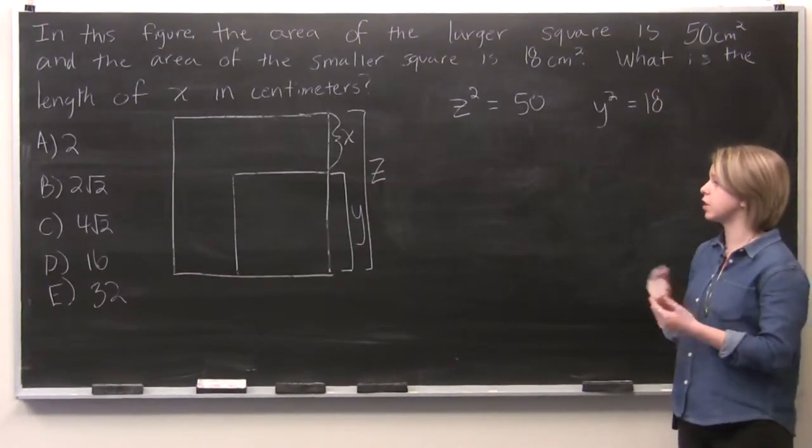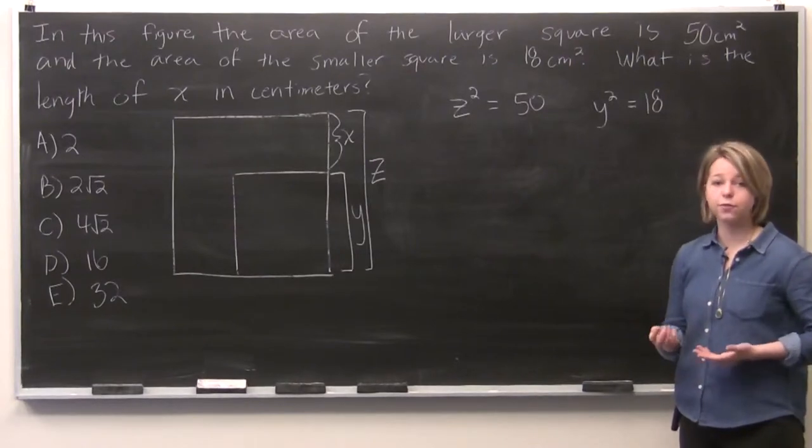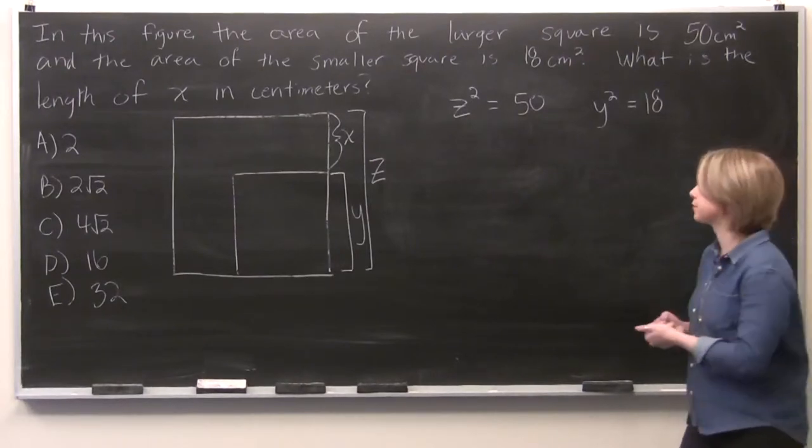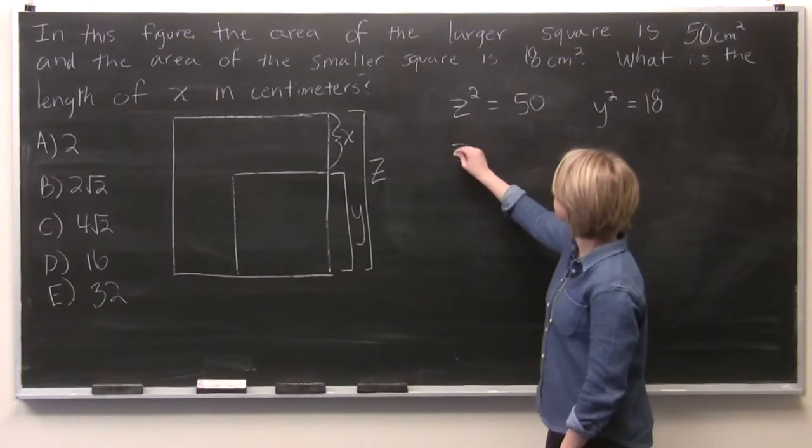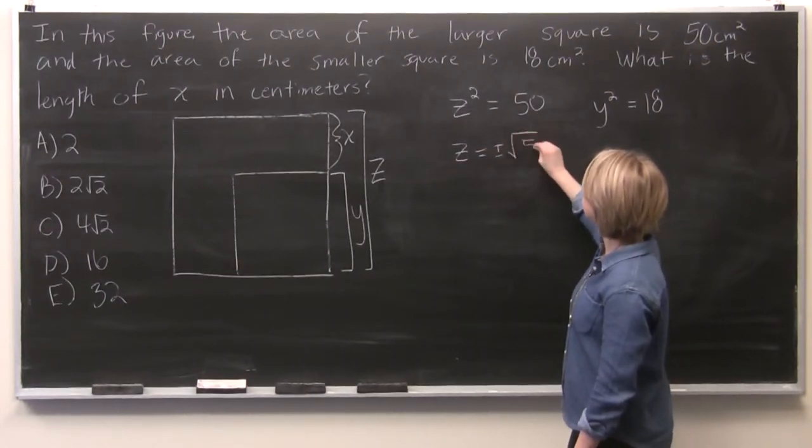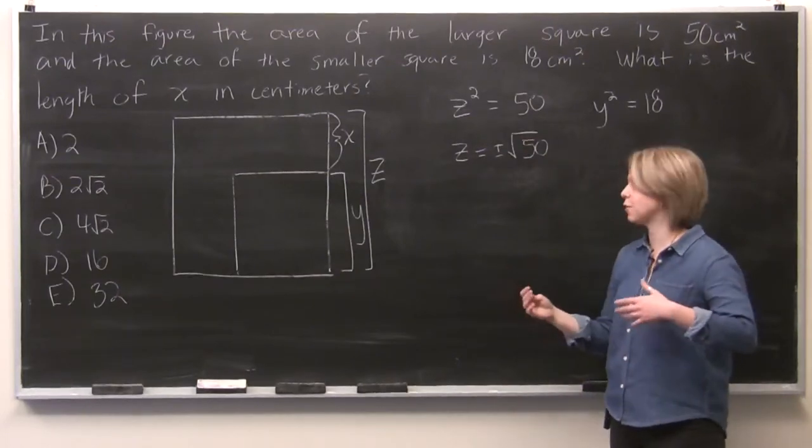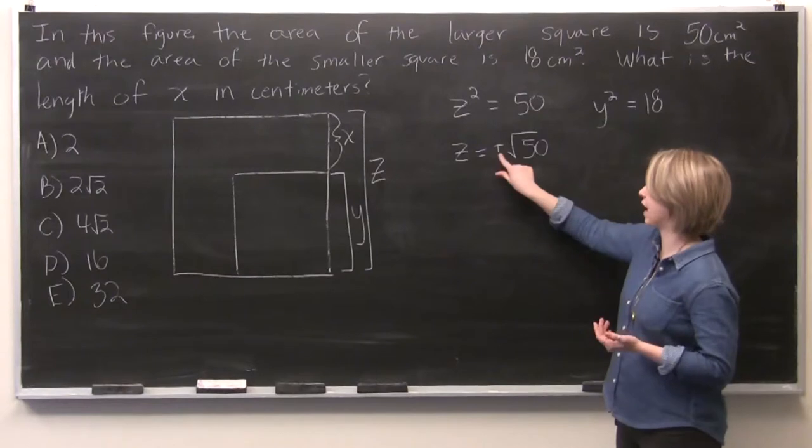And so we're going to solve for each of those, and we will be able to solve for x using those two variables. So z is equal to plus or minus the square root of 50. But because we're working in lengths, we can ignore the negative. We can't have a negative length.